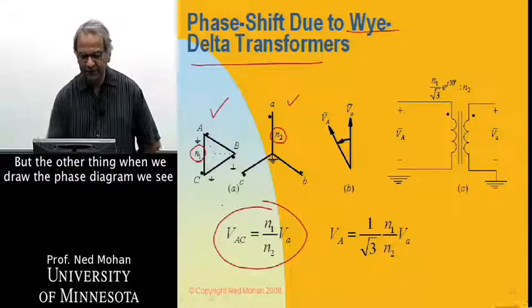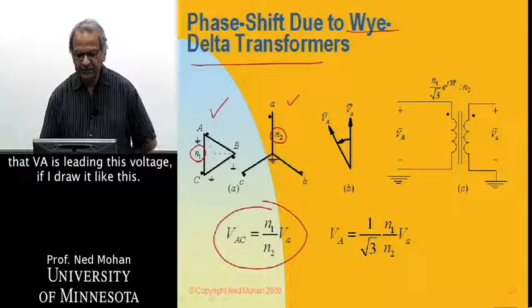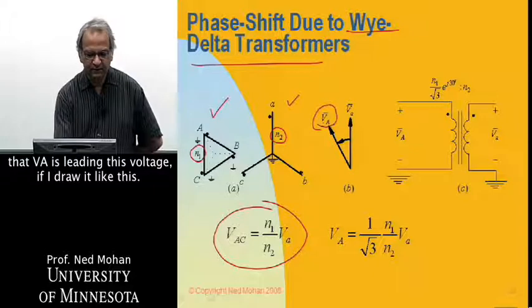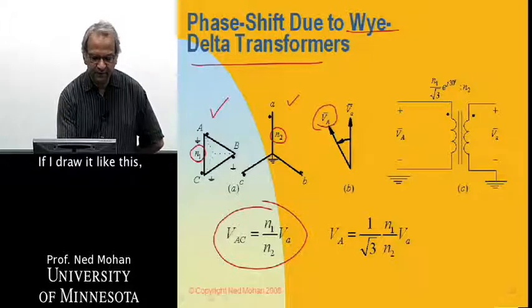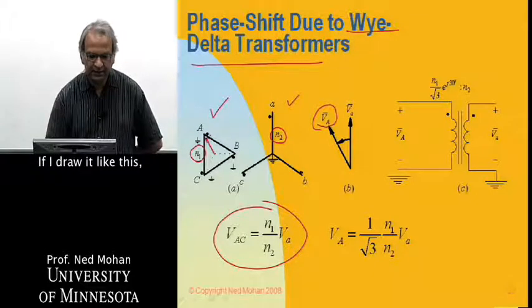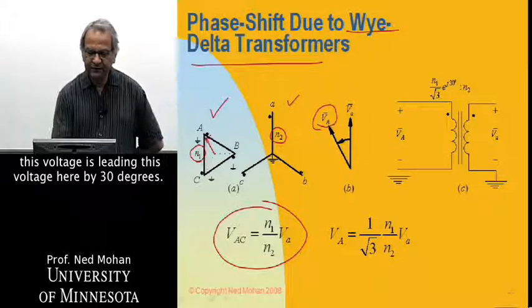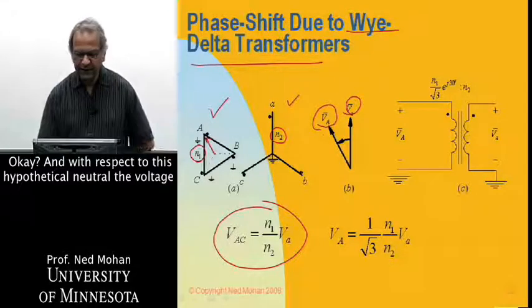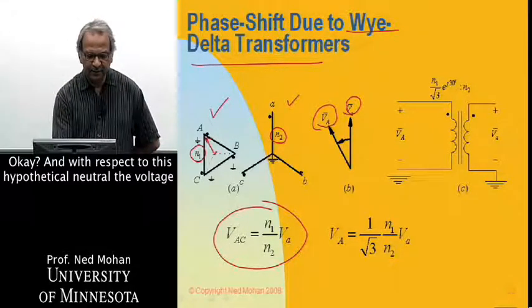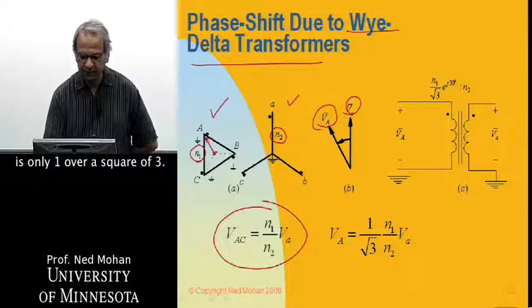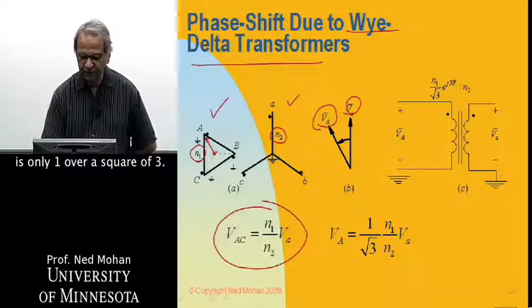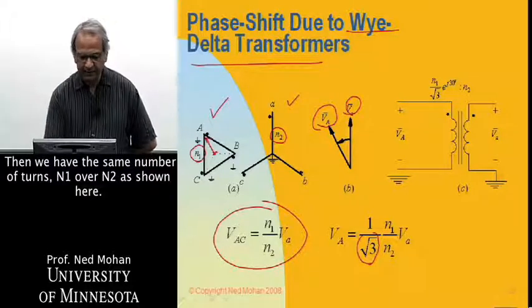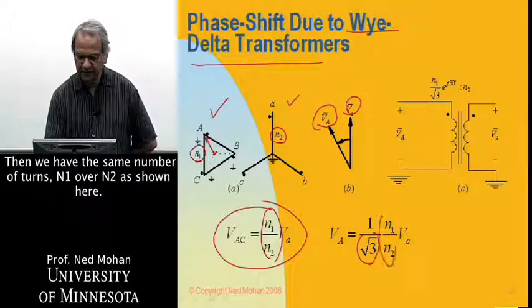But the other thing, when we draw the phasor diagram, we see that VA is leading this voltage. If I draw it like this, this voltage is leading this voltage here by 30 degrees. And with respect to this hypothetical neutral, the voltage is only 1 over square root of 3. So that's where this factor comes in. And then we have the same number of turns, N1 over N2, as shown here.